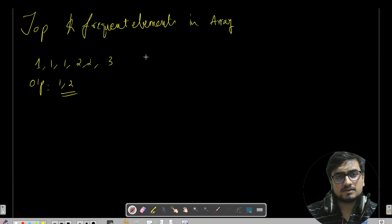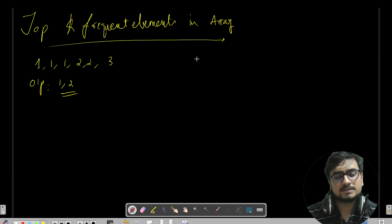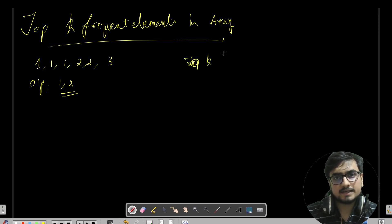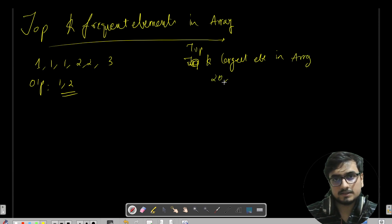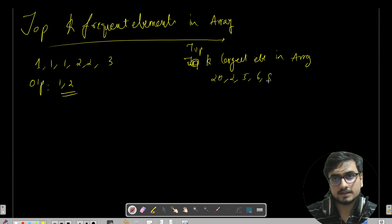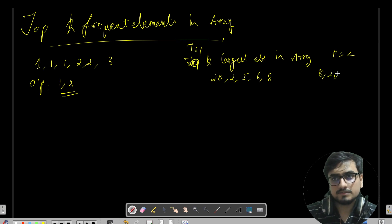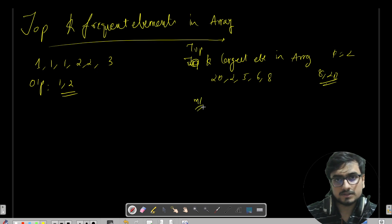This question is based on finding the top K largest elements in an array. Suppose you have elements like 20, 2, 5, 6, and 8 and you need to find the top K largest where K is 2. You would say the largest among them are 8 and 20.